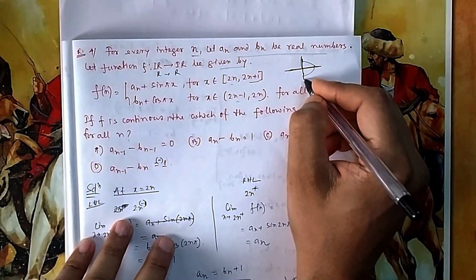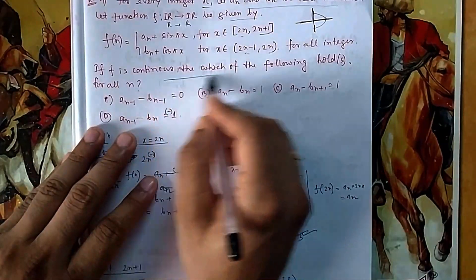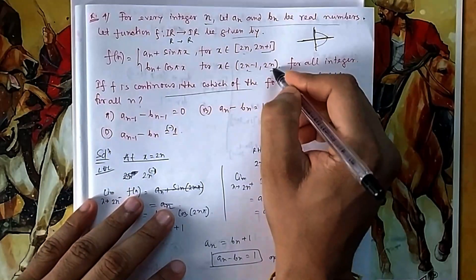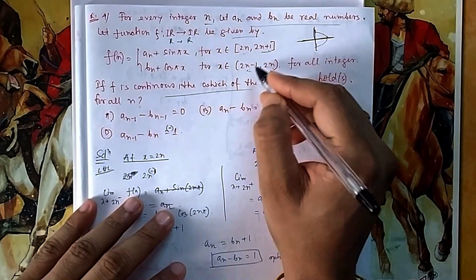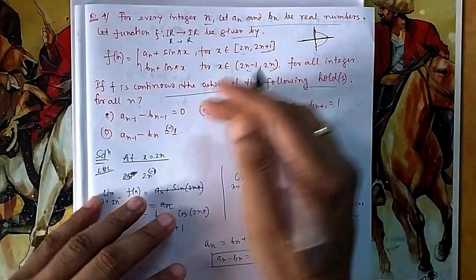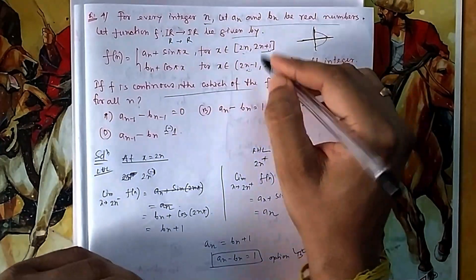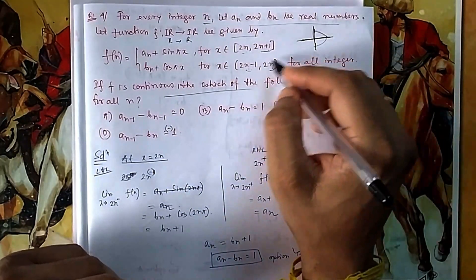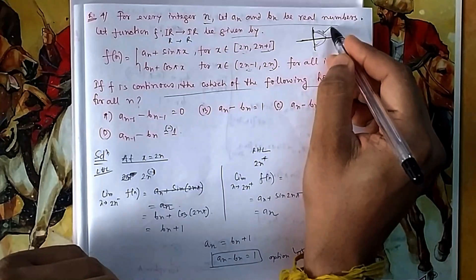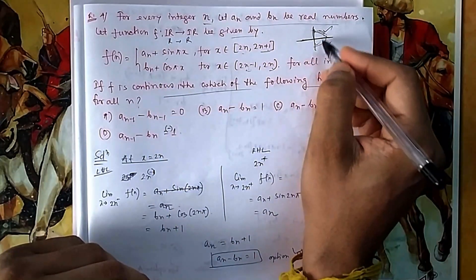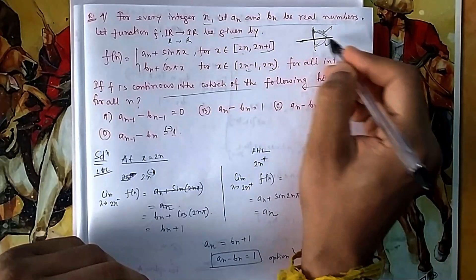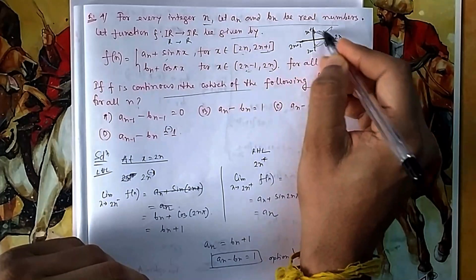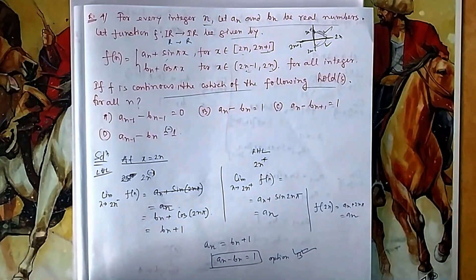Since f is continuous, we need to check all the break points. The break points are all integers: 2n, 2n+1, 2n-1, 2n+2, etc. The function alternates between two different expressions from one block to the next — one block is [2n, 2n+1] and another is [2n-1, 2n]. All these boundary points must be checked for continuity.